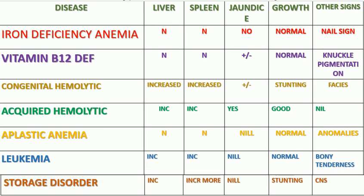This is how clinically from pallor you can make a diagnosis. Look at the liver, spleen, jaundice, growth, and other signs — that will help you diagnose and identify the disease. From just pallor with some clinical findings, we were able to identify so many diseases. I hope you liked it. Please do subscribe, share our videos. Take care, bye.